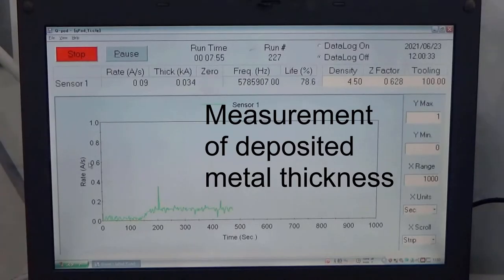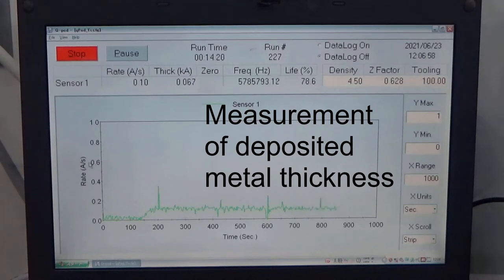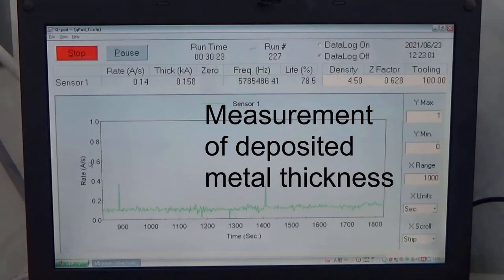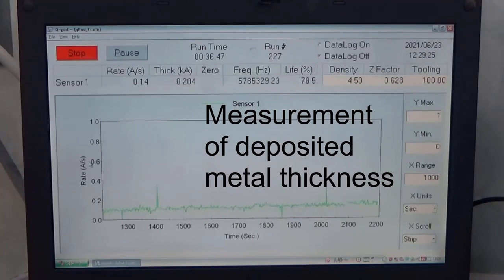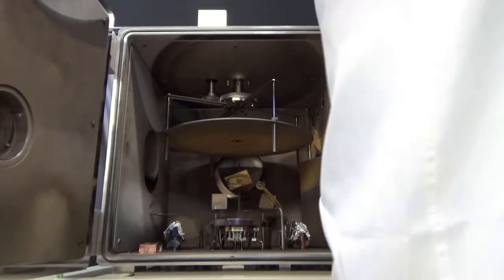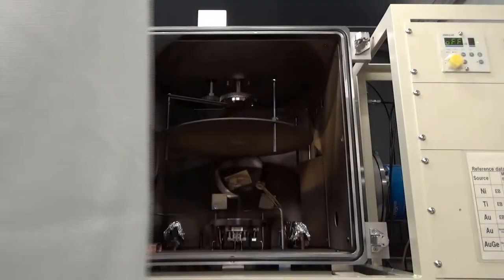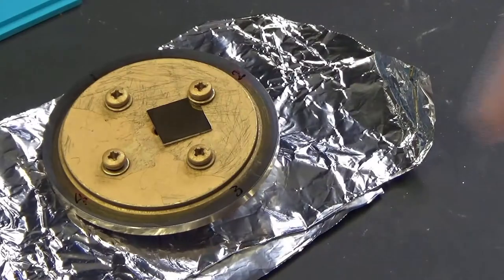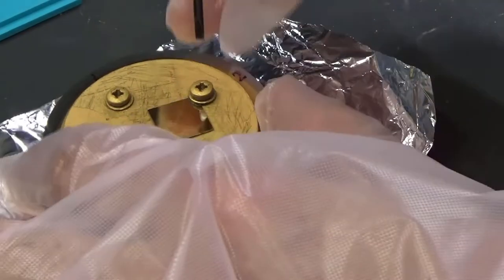At the same time, a sensor measures the deposited metal thickness. Metals we use include gold, nickel and titanium.